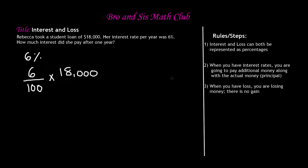Step number two says: when you have interest rates, you're going to pay additional money along with the actual money, which is your principal. The actual money — the principal — is eighteen thousand dollars. The interest is how much additional money you'll be paying because you took that loan. So we're calculating the additional money Rebecca will have to pay, which is six over one hundred times eighteen thousand.